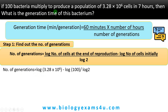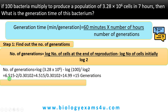Number of generations = log(3.28 × 10⁶) − log(100), divided by log 2. The log value of 3.28 × 10⁶ is 6.515, and log 100 is 2. So we get 6.515 − 2 = 4.515, divided by 0.30102 (the value of log 2), which equals 14.99, approximately 15 generations.